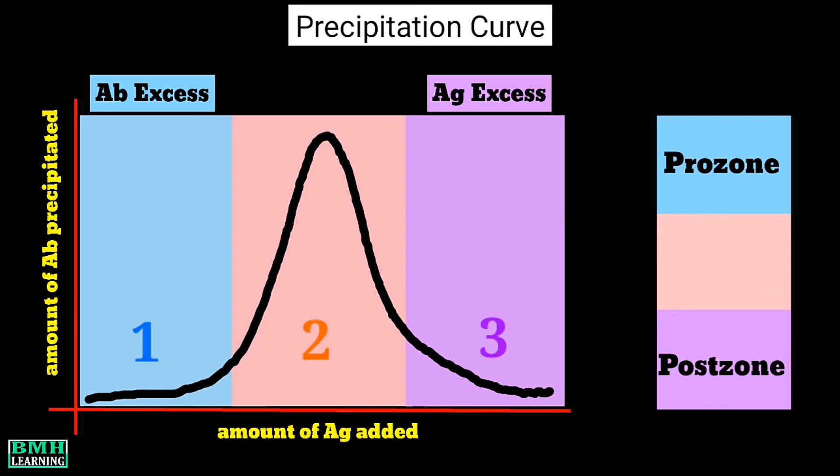In between these two zones, we have zone number two. This specific area shows that the amount of antigen is equal to the amount of antibody, and this is called the zone of equivalence. And remember one thing here: prozone and post-zone phenomena are negative reactions.